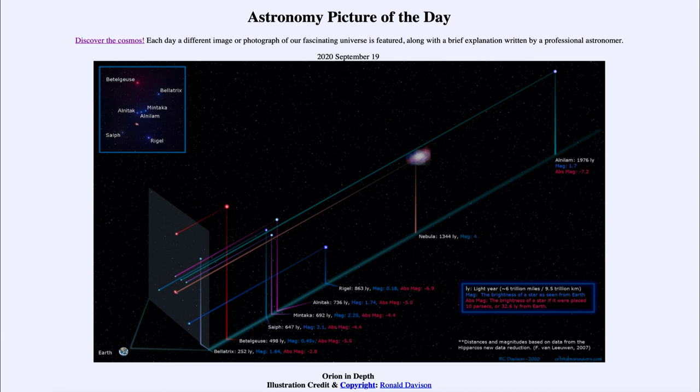We get that in our picture here today where we can see all of those distances for Orion and how those objects that make up the constellation are actually very spread out in distance from the Earth.